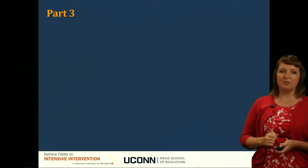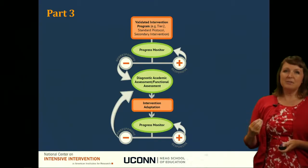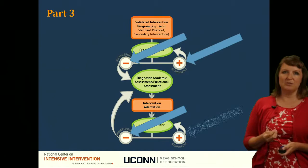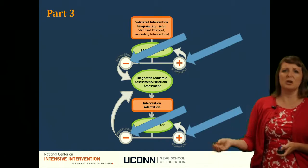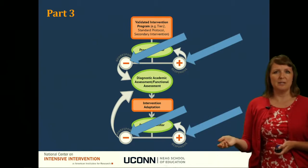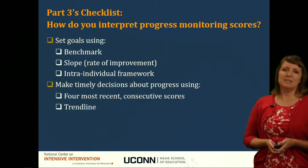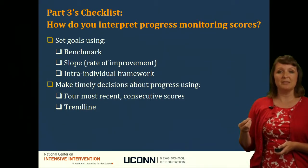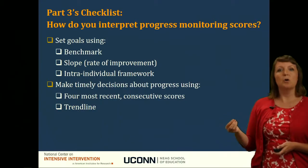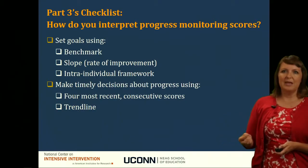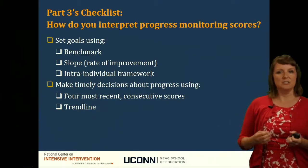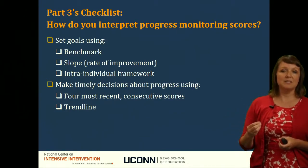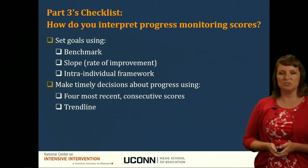In part three, we focused on the response and non-response of students, and how to determine whether students are responding or not responding. With your checklist, think about setting goals using one of three methods: the benchmark, the slope, or the intra-individual framework. Then make timely decisions about the student's progress using either the four most recent consecutive scores or the student's trend line.